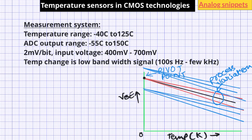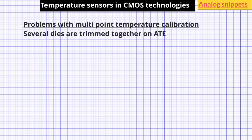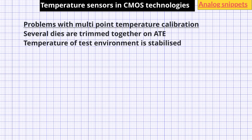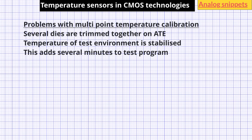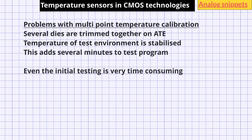Multipoint temperature calibration is an undesirable feature in production. When trimming production parts, we try to trim several devices at once using automated test equipment, and the temperature of the test environment must be stabilized to high accuracy — since any error in this temperature adds directly to the sensor's accuracy. Because temperature stabilization takes time, it adds several minutes to the test program, compared to the actual trimming itself which takes only milliseconds. For this reason, multipoint temperature calibration significantly adds to production cost, and even initial testing of any high accuracy temperature sensor is very time consuming. I hope this video has given you a fair idea of temperature sensor design. I will elaborate on some topics in future videos — post your comments below and thanks for watching.